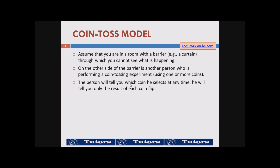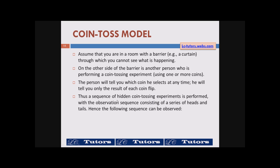The person will not tell you which coin he selects at any time — he will tell you only the result of each coin flip. Thus a sequence of hidden coin tossing experiments is performed, with the observation sequence consisting of a series of heads and tails. The observation is something like that, but we don't know whether he tossed one coin, two coins, or three coins.